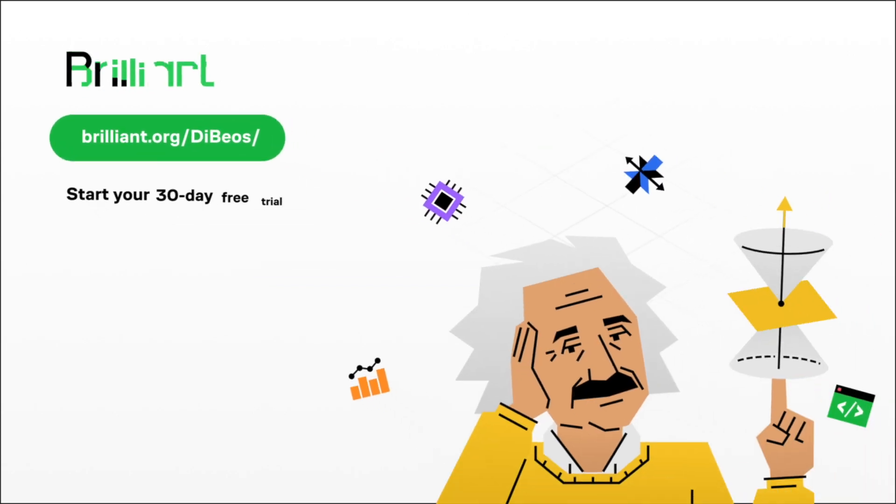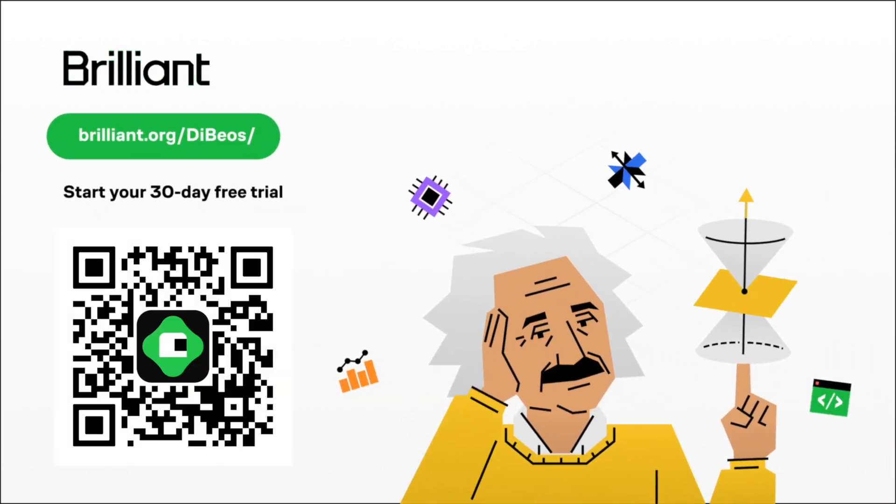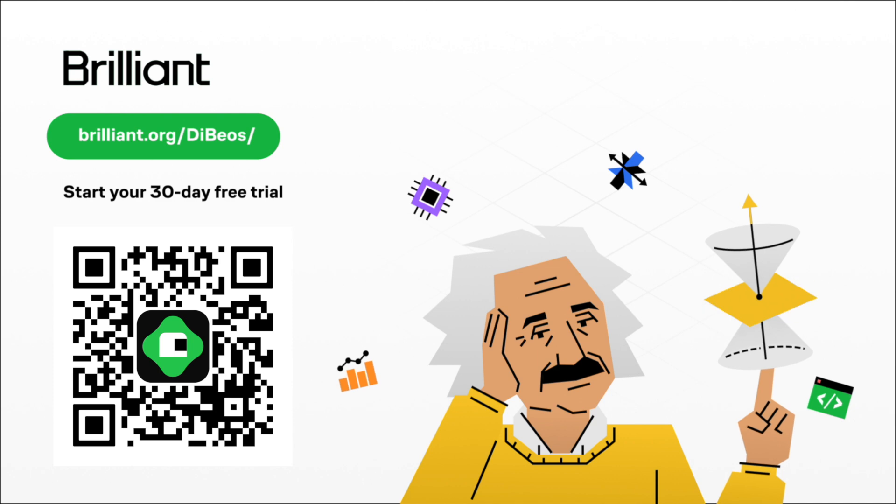So, if you're eager to dive deeper into math or any other subject, head over to brilliant.org to start your free trial or use this QR code. Plus, by using our link, you'll get an exclusive 20% off of your annual membership.